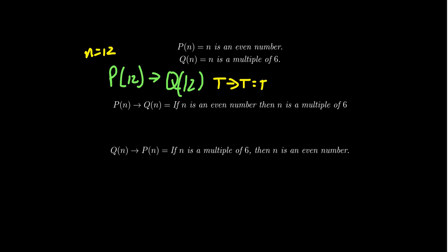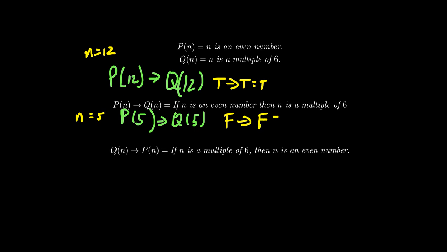Conversely, look at the instance where N equals 5. You get P(5) implies Q(5). 5 is not an even number, so that's false. And 5 is not a multiple of 6, so that's also false. But the conditional statement itself is actually true — this is an example of being vacuously true.